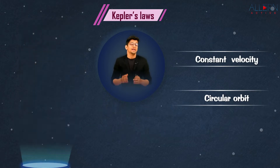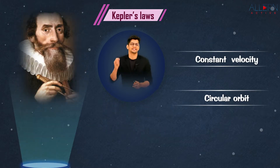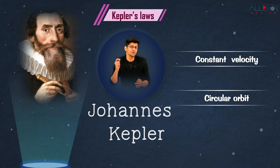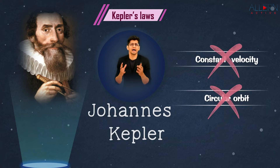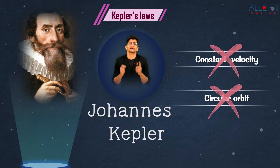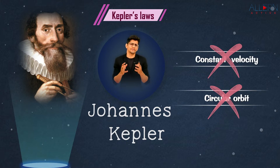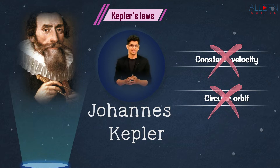Later on, there was a person named Johannes Kepler. Kepler said: I agree that everything revolves around the Sun, but I don't agree that everything revolves in a circular orbit with a constant velocity. To understand how Kepler proved this, we need to understand Kepler's laws of planetary motion.